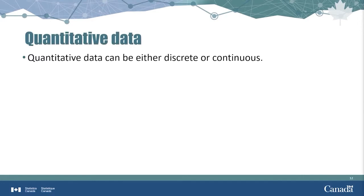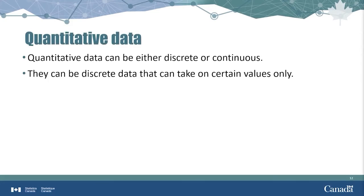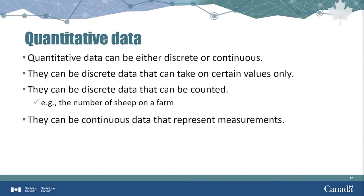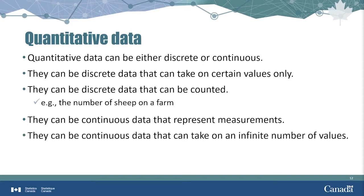Quantitative data, also called numerical data, can be either discrete or continuous. When the data values are distinct and separate, and they can take on certain values only, they are called discrete data. Discrete data can be only counted, not measured. For example, the number of sheep on a farm. Continuous data, on the other hand, represent measurements, not counts. Continuous data can take on an infinite number of values, but, for practical reasons, continuous data are measured using a discrete scale.